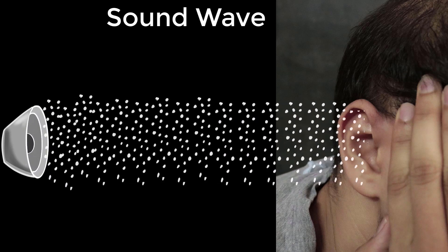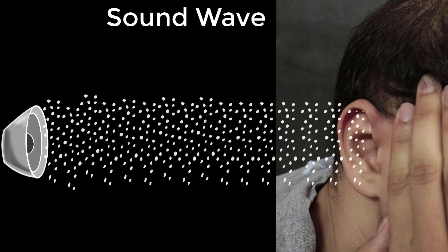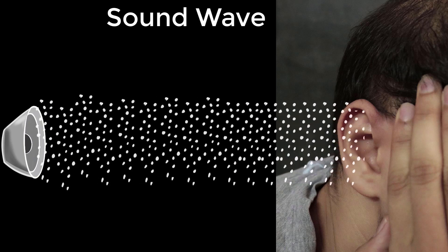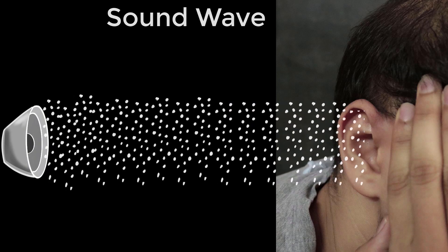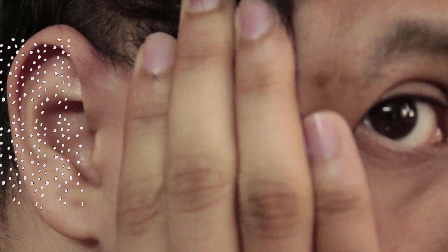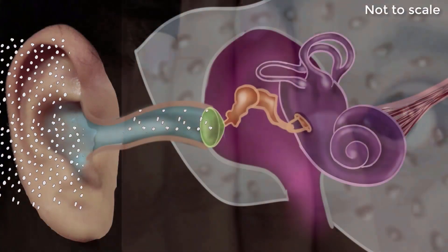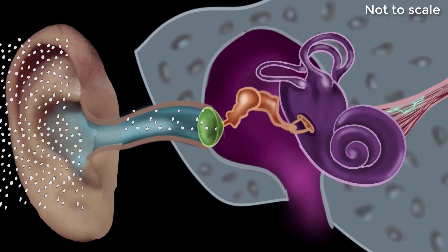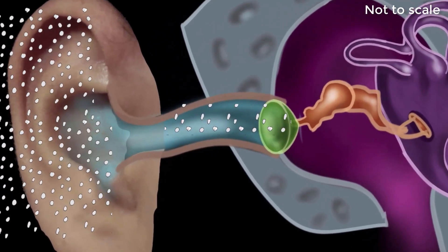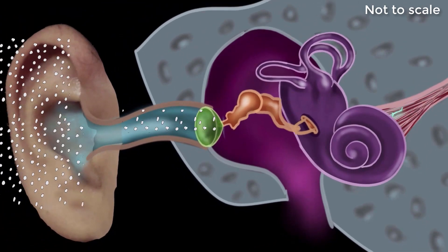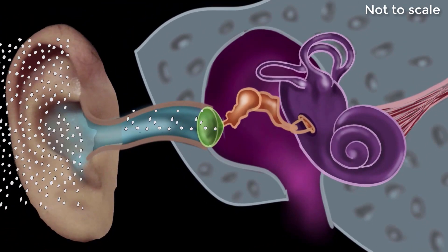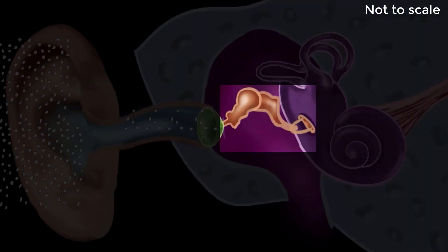But how does something as boring as air molecules going back and forth make us experience something like this? For that we need to look at our ear carefully — the entire structure of the ear. So let's look at how the different parts of the ear work together to make us experience sound. Our ear can be divided into three parts: the outer ear, the middle ear, and the inner ear.